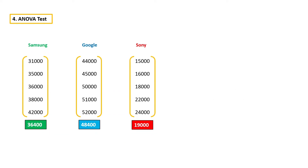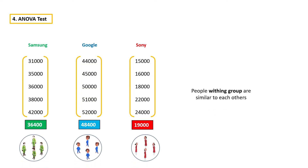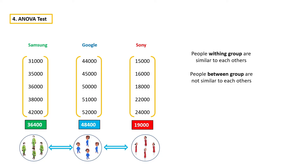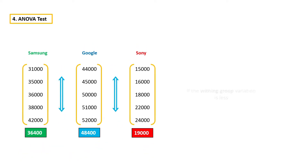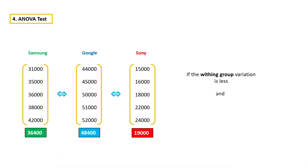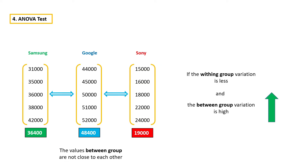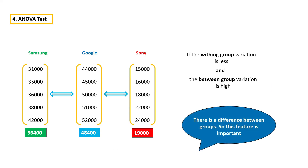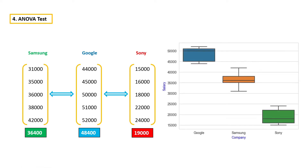If this is not clear, just think of it this way: if people within a group are similar to each other, but people between groups are not similar to each other — meaning the groups do not look similar to each other — which means there is a difference between groups. This is the idea behind ANOVA. So, the idea is: if the within-group variation is less and the between-group variation is high, which means there is a difference between groups, so this feature is important. If you plot a box plot, it will make it even clearer.